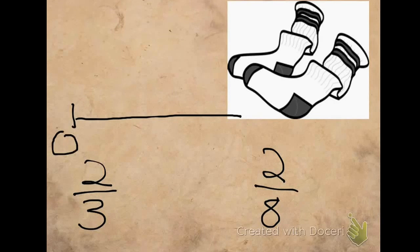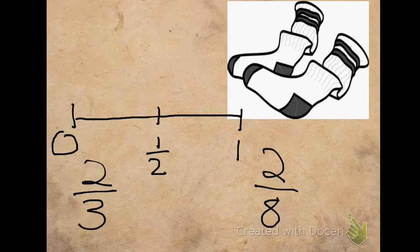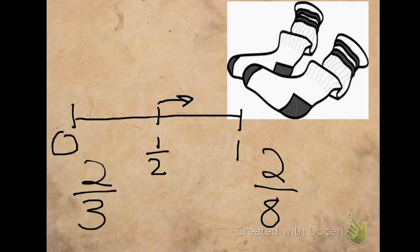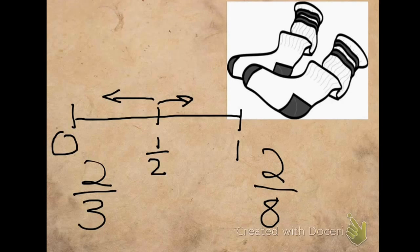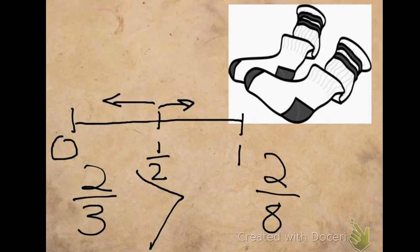I have 0, 1 half, and 1. Our first fraction is 2 thirds, because Chris's sock drawer is 2 thirds white. I know from using my fraction strips that 2 thirds is more than 1 half — it's just a little bit more. Let's look at 2 eighths. I know that 2 eighths is less than 1 half, because I know that 4 eighths is the same as 1 half. So 2 eighths would be less. If I was going to compare these two fractions, I would say 2 thirds is greater than 2 eighths.